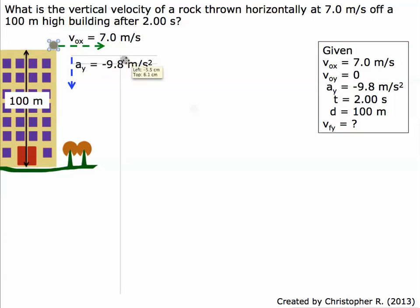What we want to find is the vertical velocity after 2 seconds as the rock goes in an arc. We're going to use the equation acceleration equals change in velocity over time to find the final velocity in the y direction.